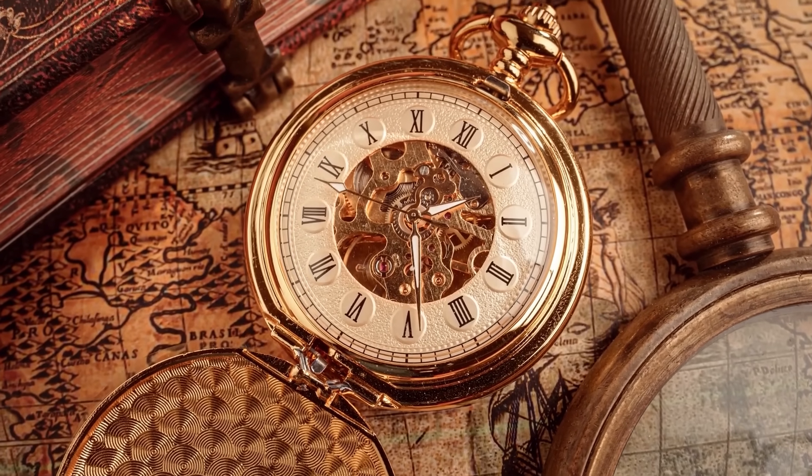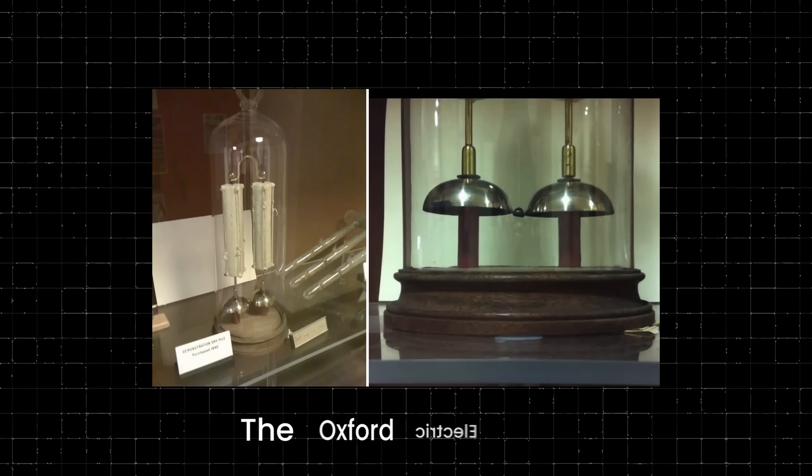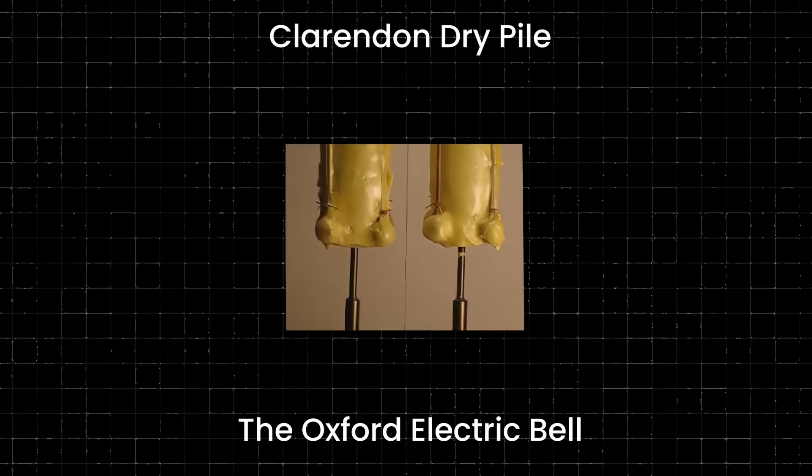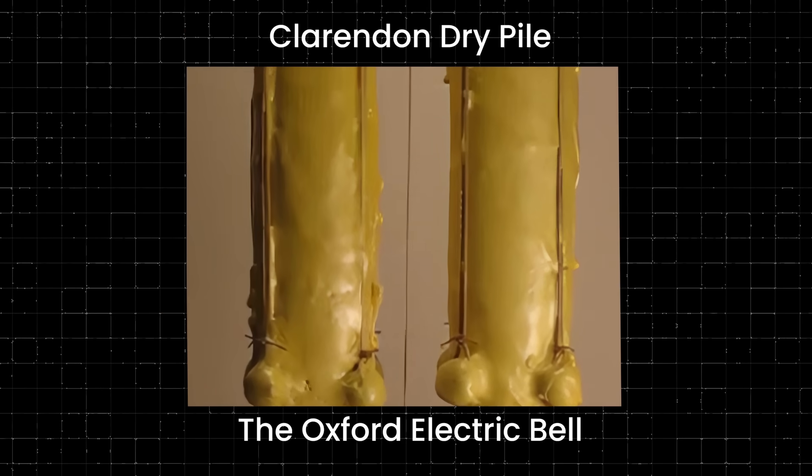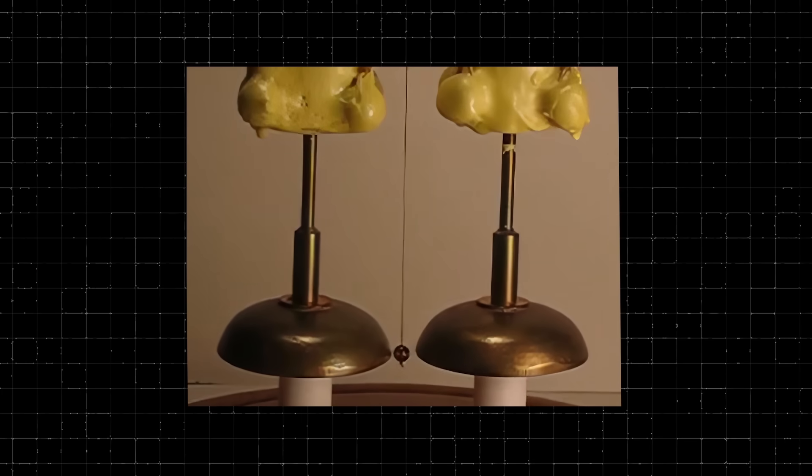If you thought the Beverly clock is an amazing invention, then this next attempt at a perpetual motion machine will surely surprise you. It's called the Oxford Electric Bell, or sometimes referred to as the Clarendon Dry Pile, because of the dry pile batteries that are used to power the device. The dry piles are very early batteries that use alternate discs of silver, zinc, and coated with sulfur that generate low currents of electricity.